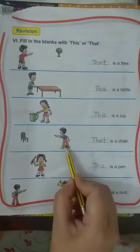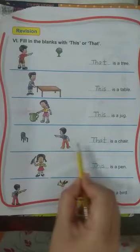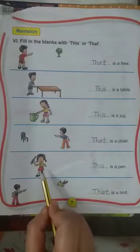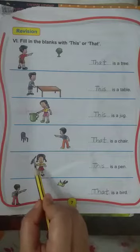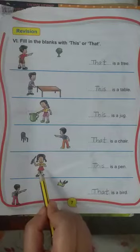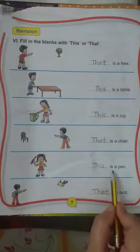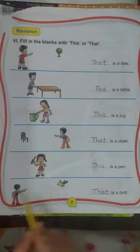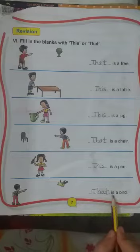In this picture you can see the chair is far from this boy, so we will use: 'That is a chair.' And in the next picture there is a pen in this girl's hand, so we will use 'this': 'This is a pen.' And here in the last picture you can see that a bird is flying but it is far from that boy, so we use: 'That is a bird.'